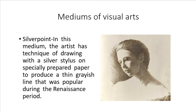The next medium is silverpoint. In this technique, the artist draws with a silver stylus on specially prepared paper to produce a thin grayish line that was popular during the Renaissance period. The silverpoint does not actually use ink — rather, it is more like carving into a special type of paper to create an effect.